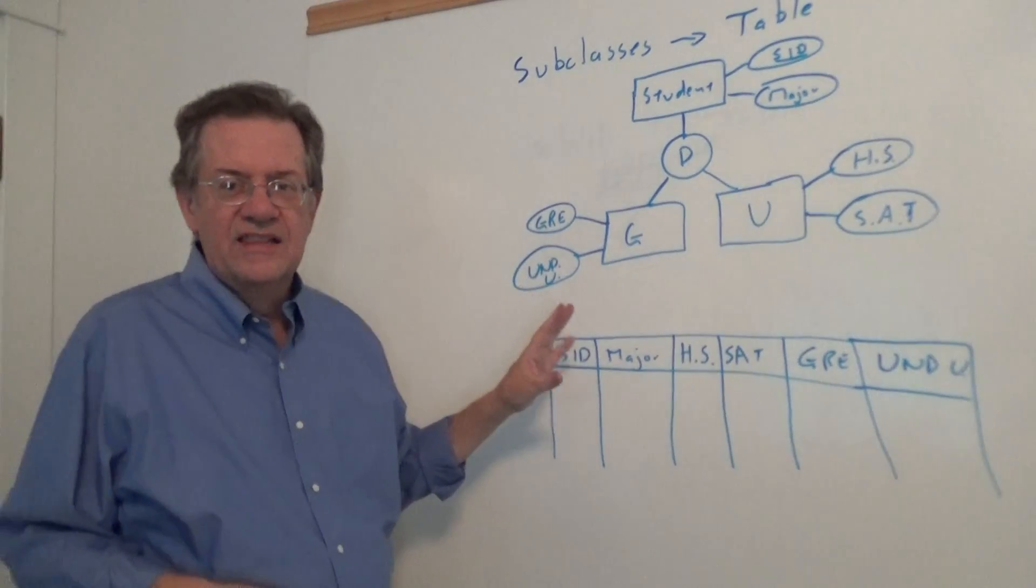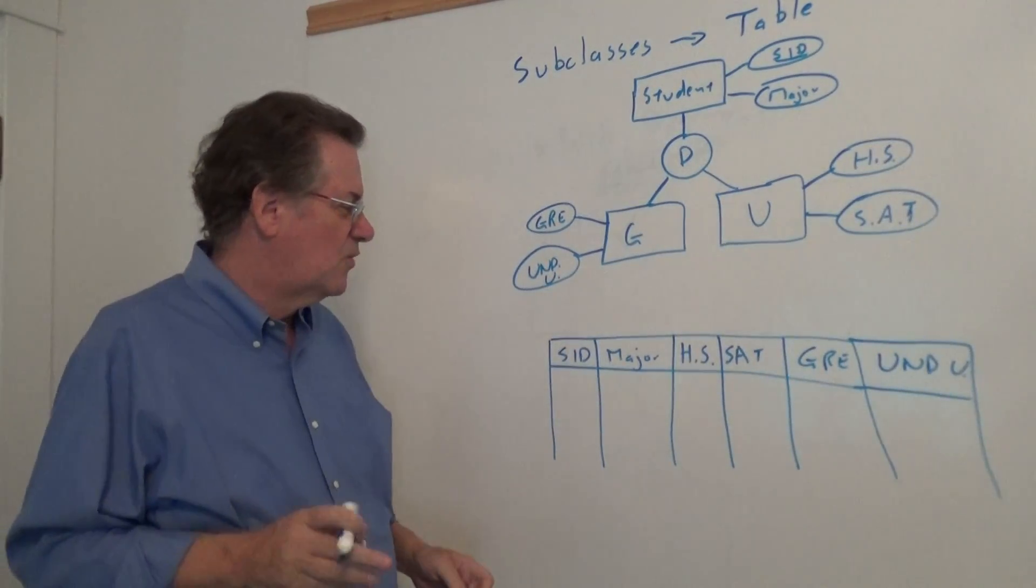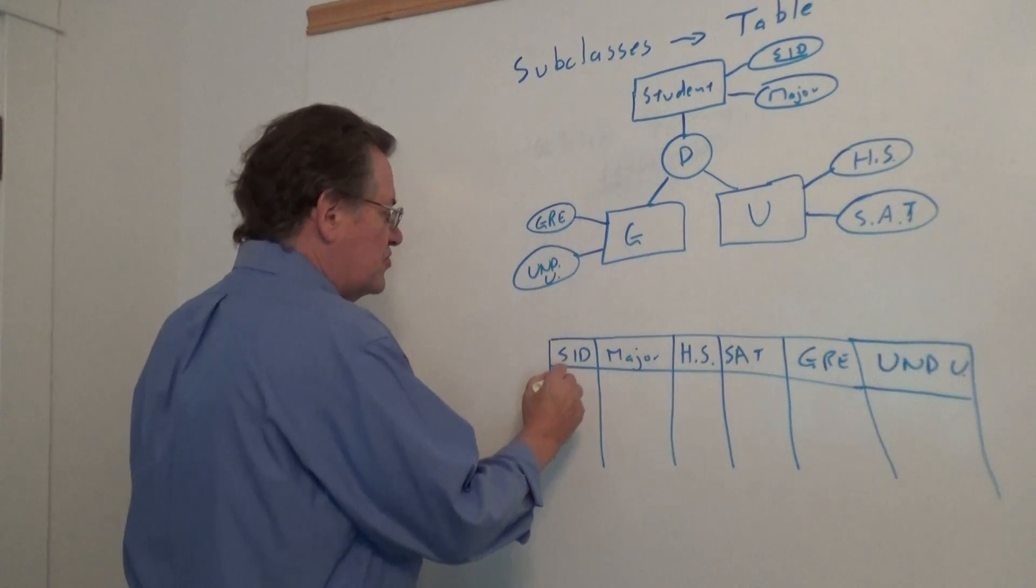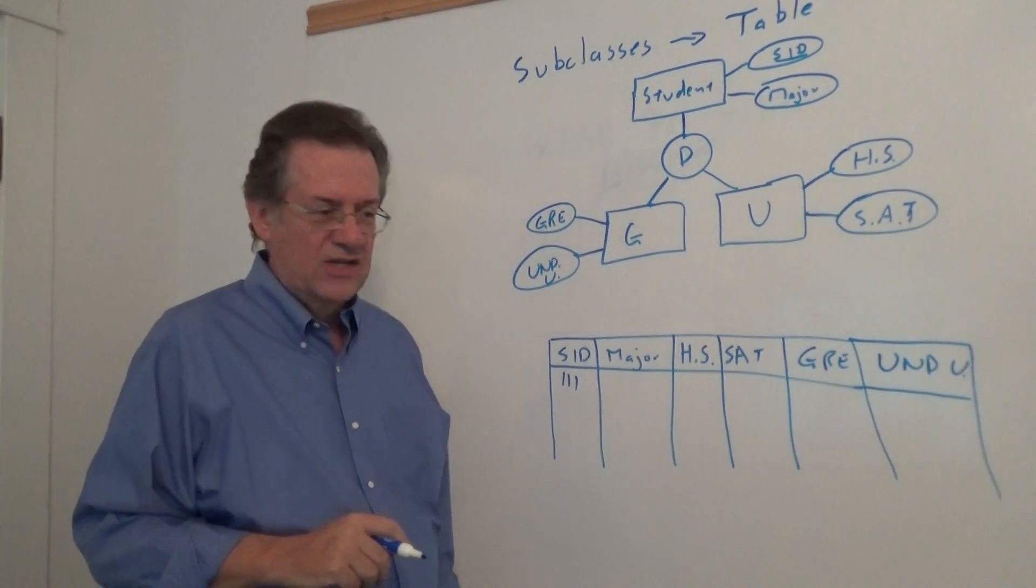Well, one approach is we take this and we merge this into one large table. And so we would have, for example, student ID 111. Let's say the first student is an undergraduate.